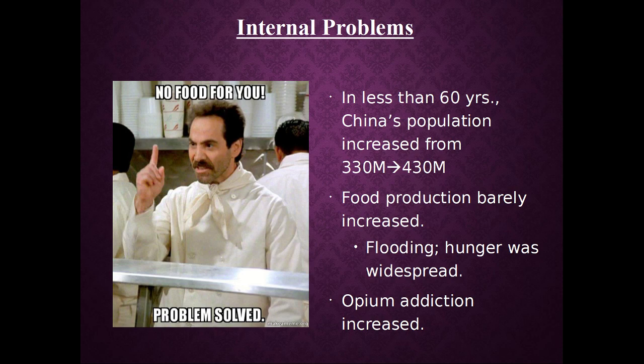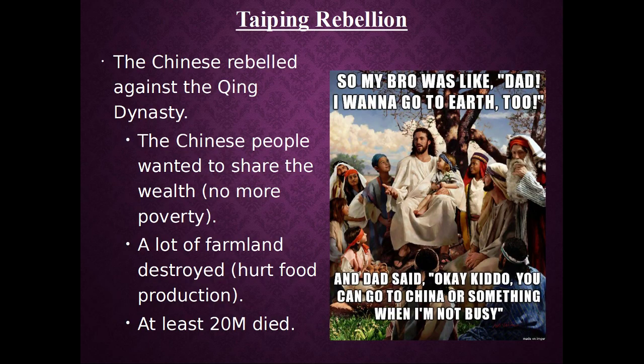On top of that, opium addiction is not going away — it's actually increasing because Britain won those opium wars. So they're running into a problem. And this problem is going to be solved by Jesus's Chinese brother. There's this thing called the Taiping Rebellion — the Chinese rebelled not against the foreigners or Europeans, but against the Qing dynasty, because the Qing dynasty wasn't addressing their problems. The Chinese people wanted to share in the wealth that the upper class had.